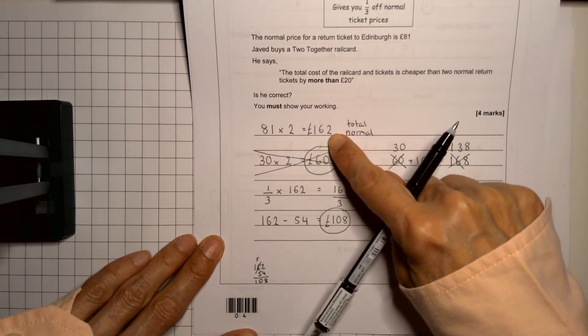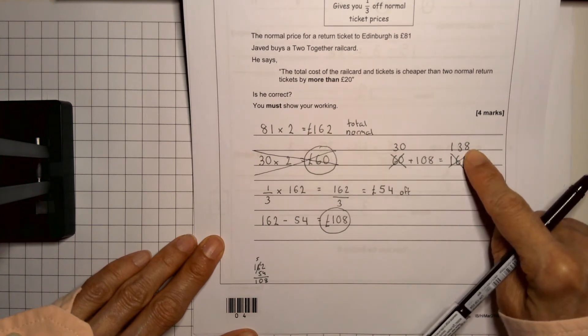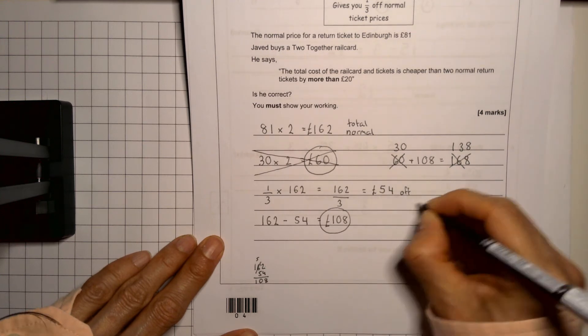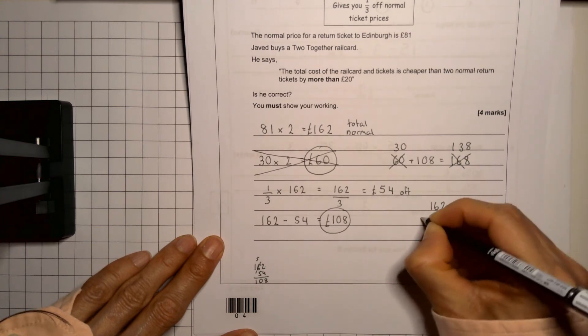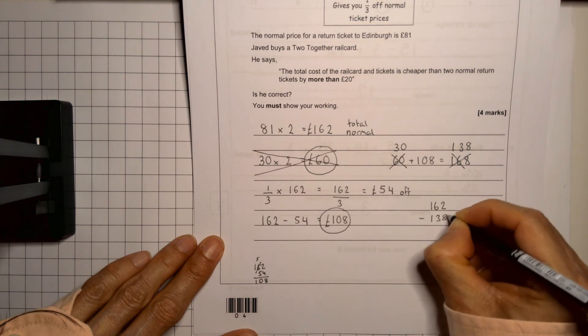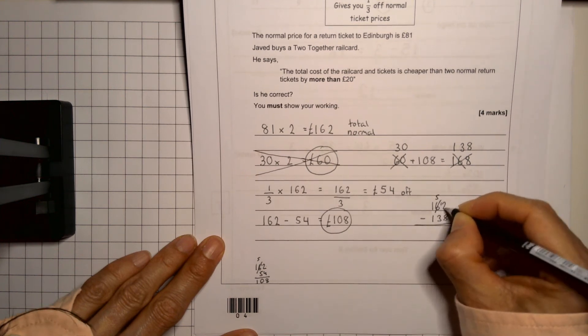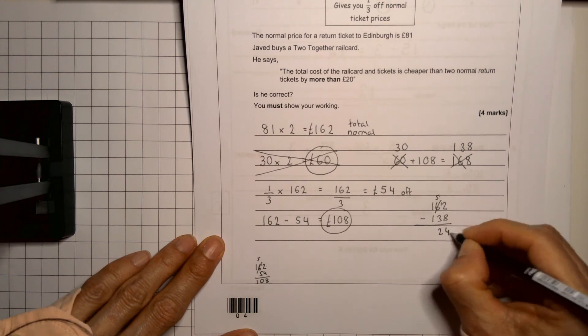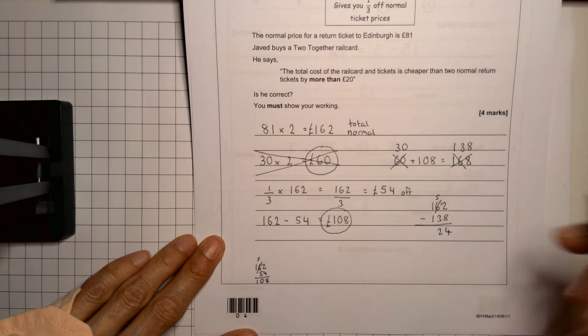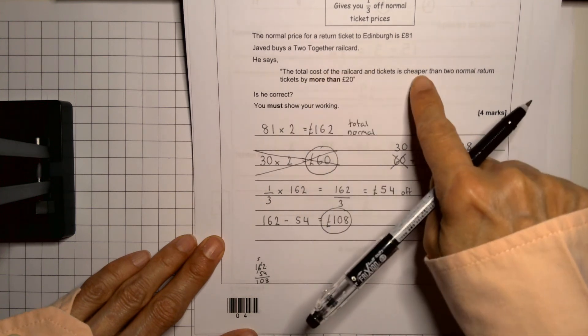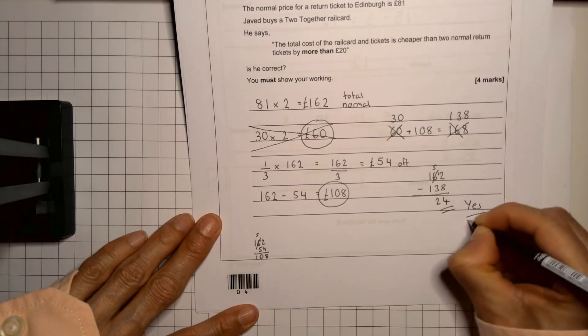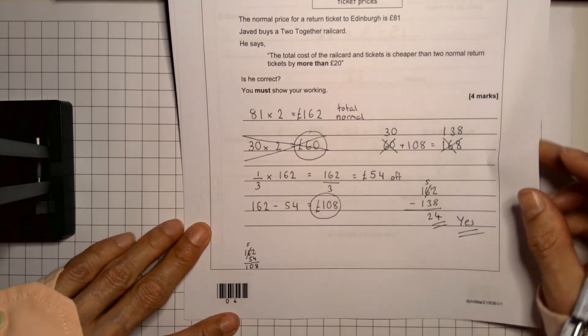So the question is, is this cheaper by £20 or more? So let's just subtract it away from each other or count upwards. So let's do 162 take away 138. So for that, I'm going to have to borrow. So that becomes 5 and 12. 12 take away 8 is 4. 5 take away 3 is 2. And so it is £24 cheaper. And he said the total cost will be cheaper by more than £20. And so the answer is yes. Sorry about that little mistake, but we spotted it in time, didn't we? So well done. Let's turn over.